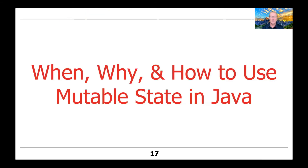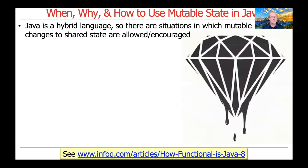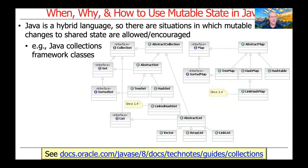The last topic is when, why, and how to use mutable state in Java. Since Java is a hybrid language, there are situations where mutable state — or changes to shared state between different threads — are allowed and even encouraged in some cases. The best example is Java's collection framework, which includes all kinds of abstract data type implementations: hash sets, array lists, hash maps, tree maps, and so on. Many of these were developed well before functional features were added to Java, so mutable shared state is very common in those existing libraries. Some are cleverly designed for concurrent programs, such as ConcurrentHashMap, which we'll discuss further in later lessons.